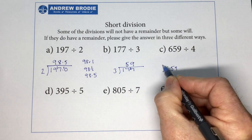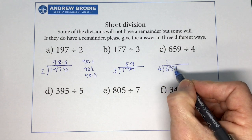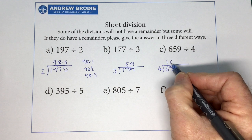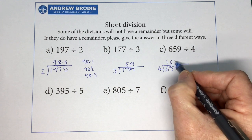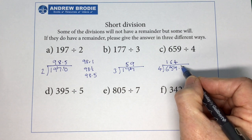659 divided by 4. 4 into 6 goes 1 with 2 left over. 4 into 25 goes 6 with 1 left over. 4 into 19 goes 4 times with 3 left over.